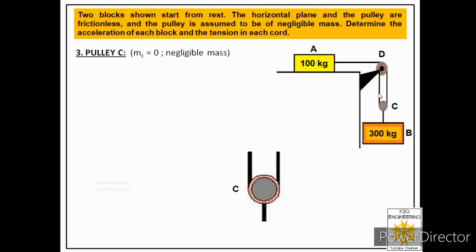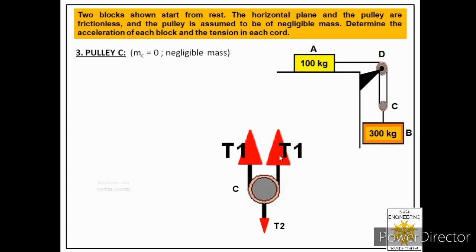To draw the free body of pulley C, we consider the pulley and the three cables attached to it: one connected to block B and two wrapped around the pulley. The cable attached to block B has tension T2 acting downward, since block B has a mass of 300 kg pulling that cable down. The two cord tensions act upward, balancing the pulley.